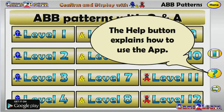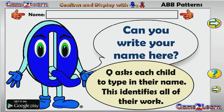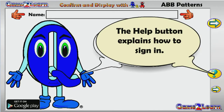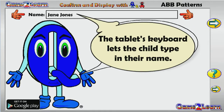The Help button explains how to use the app. Q asks each child to type in their name, which identifies all of their work. The Help button also explains how to sign in, and the tablet's keyboard lets the child type in their name.